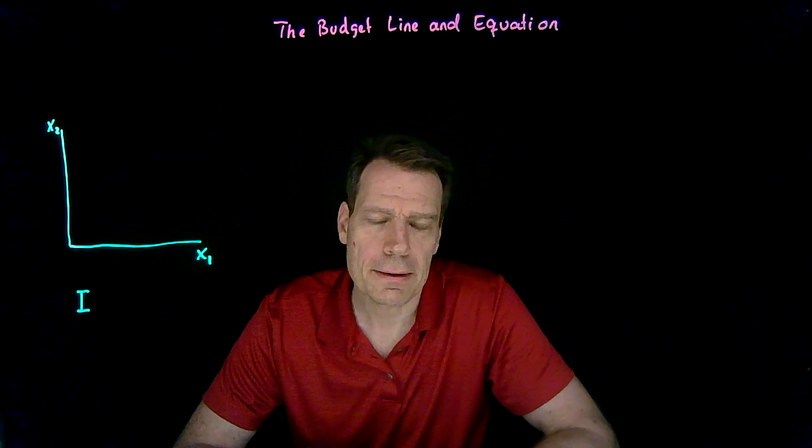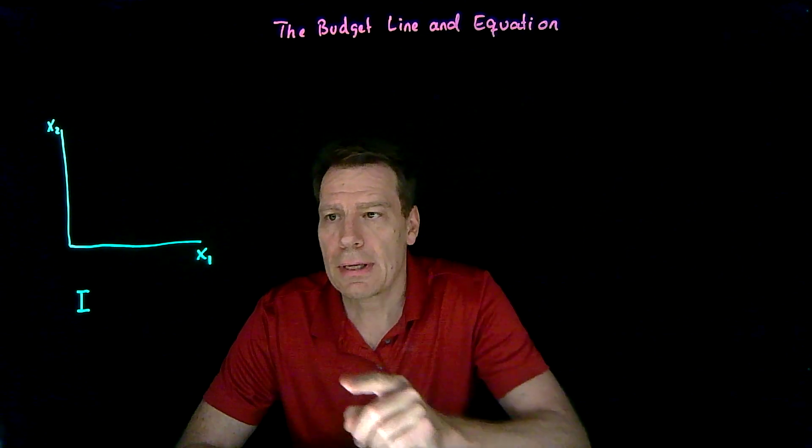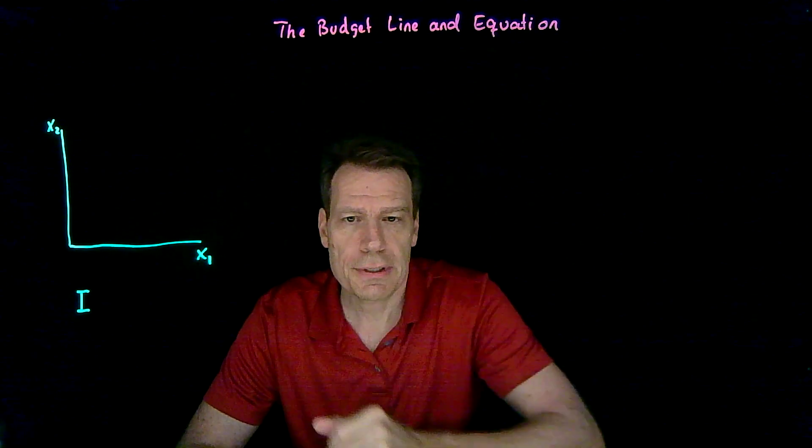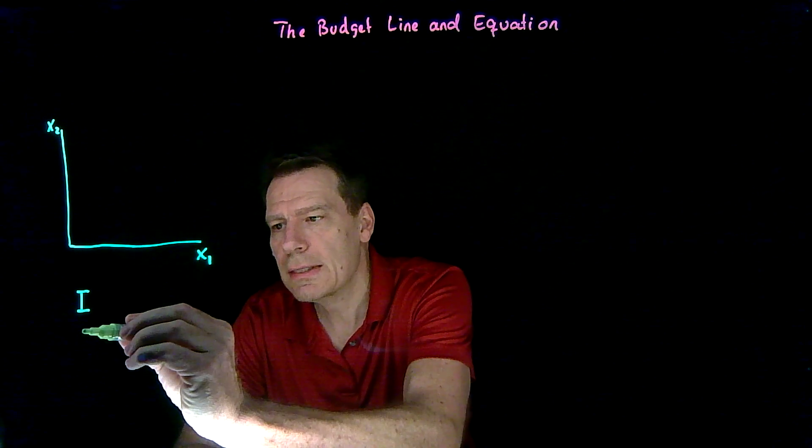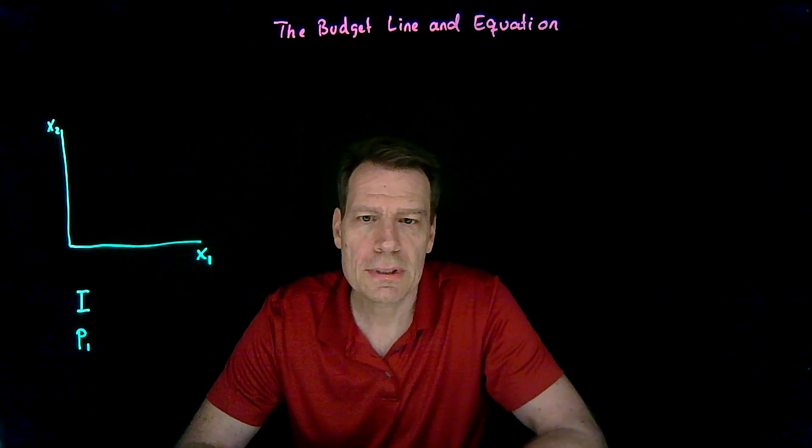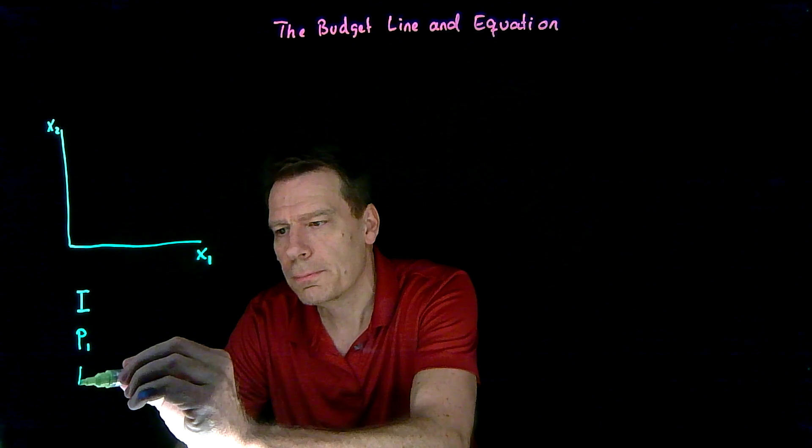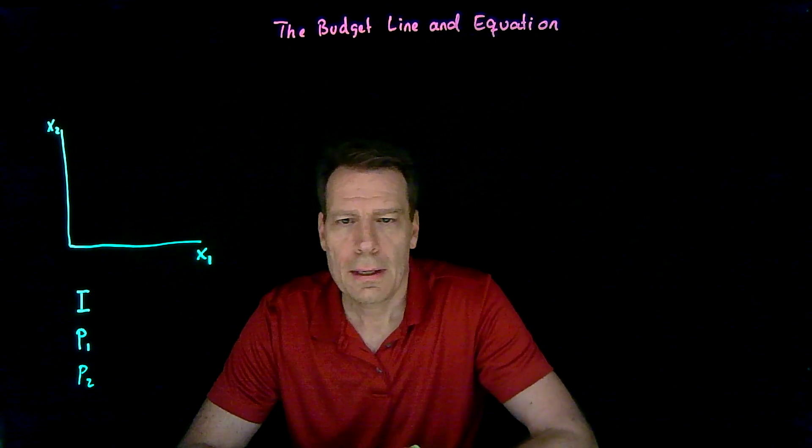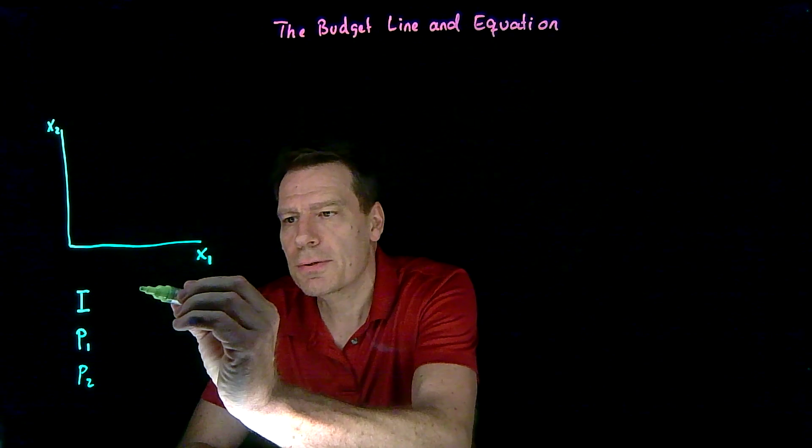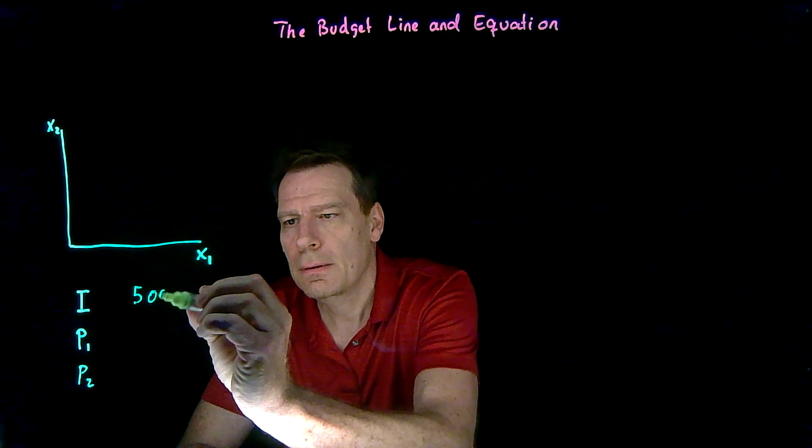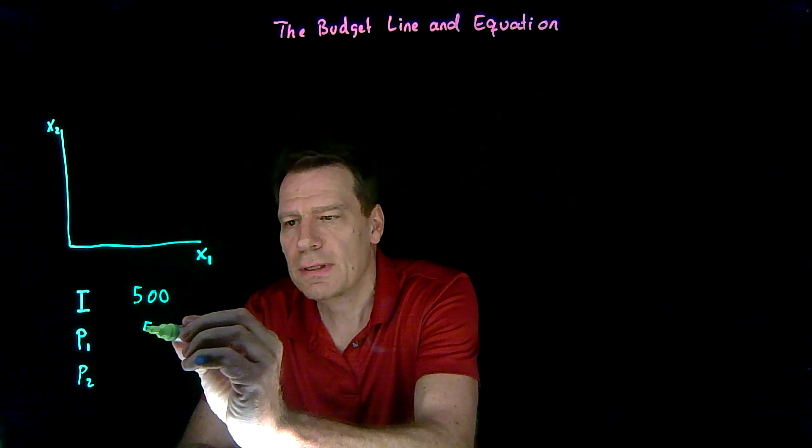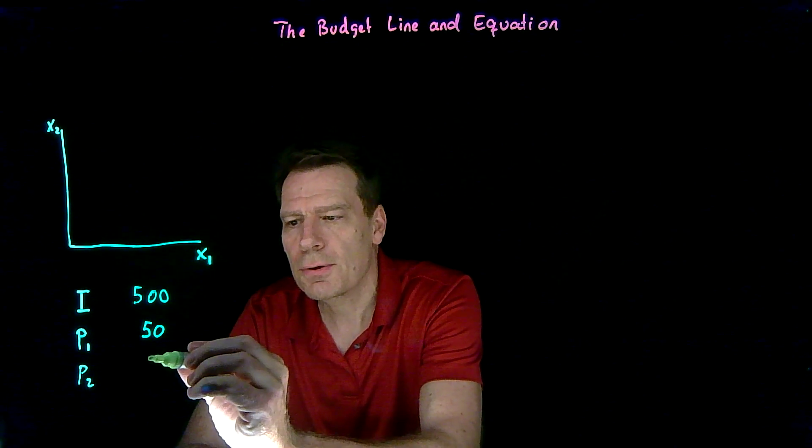We're going to denote it by I. Next, we're going to have to know how much does x1 actually cost? So we need to know the price of good one, and similarly, we need to know the price of good two. So suppose that you have $500 to spend, and the price of good one is $50, and the price of good two is $25.